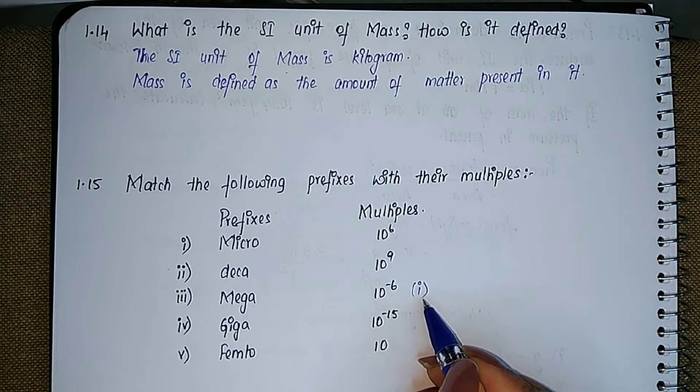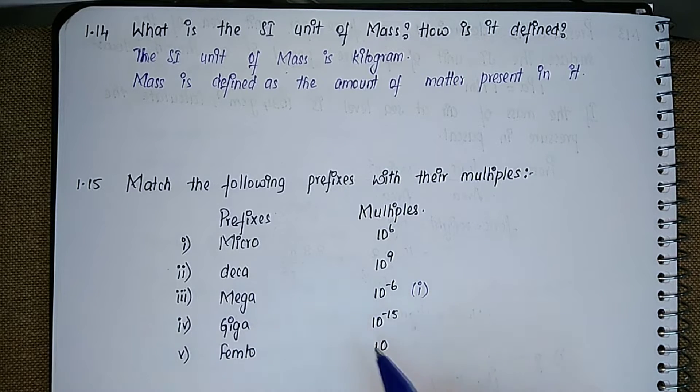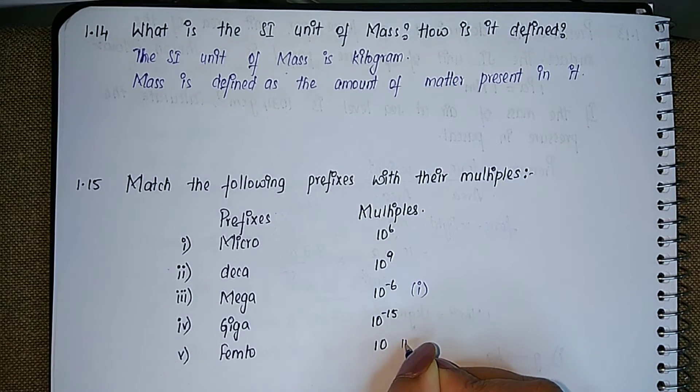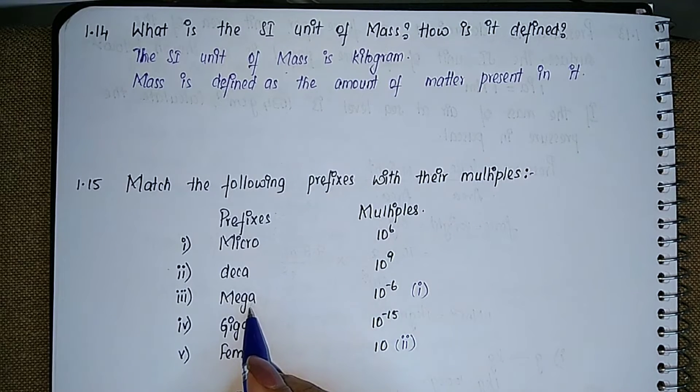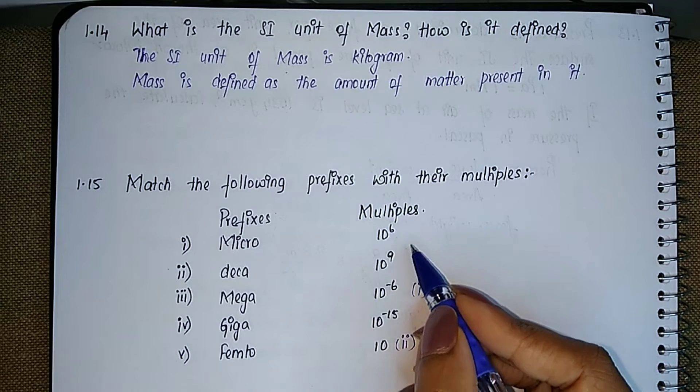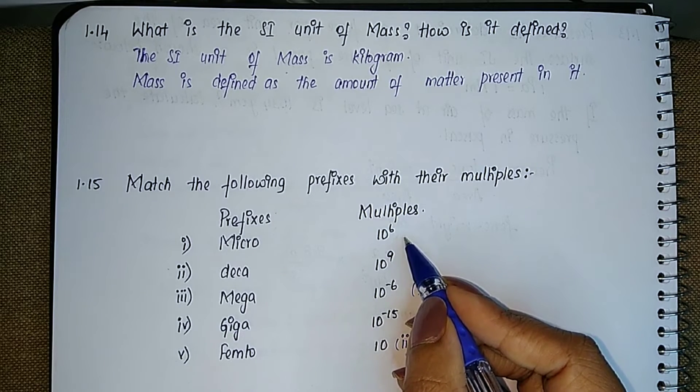Deca is going to be 10, so that is the answer for the second one. Mega is going to be 10 to the power 6, so that is the answer for the third one.